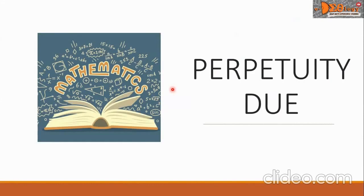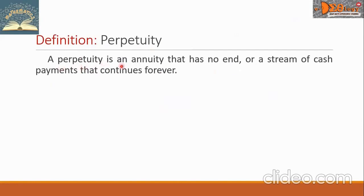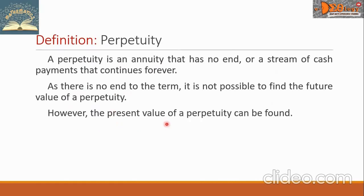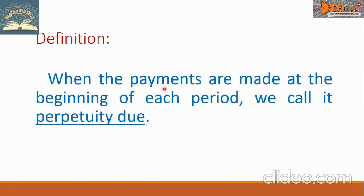Hi, everyone. Today we are going to study Perpetuity Due. A perpetuity is an annuity that has no end, or a stream of cash payments that continues forever. As there is no end to the term, it is not possible to find the future value of a perpetuity. However, the present value of a perpetuity can be found. When the payments are made at the beginning of each period, we call it Perpetuity Due.